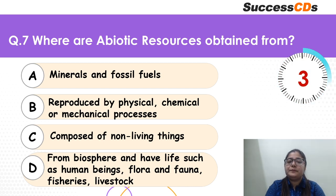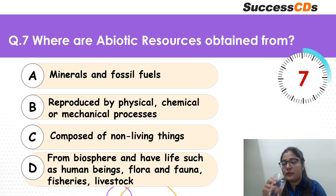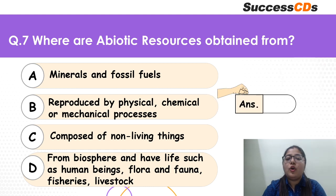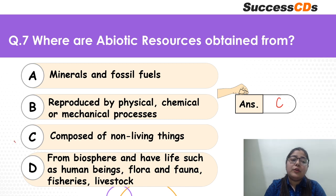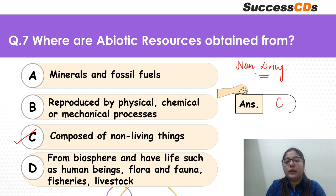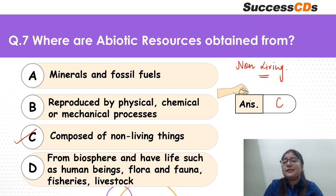Time has begun — think and tell me where abiotic resources are obtained from. The correct answer is definitely C. Abiotic is just the opposite of biotic — any non-living things that have no life will comprise your abiotic resources. For example, furniture, tables, chairs — whatever is a part of non-living things.